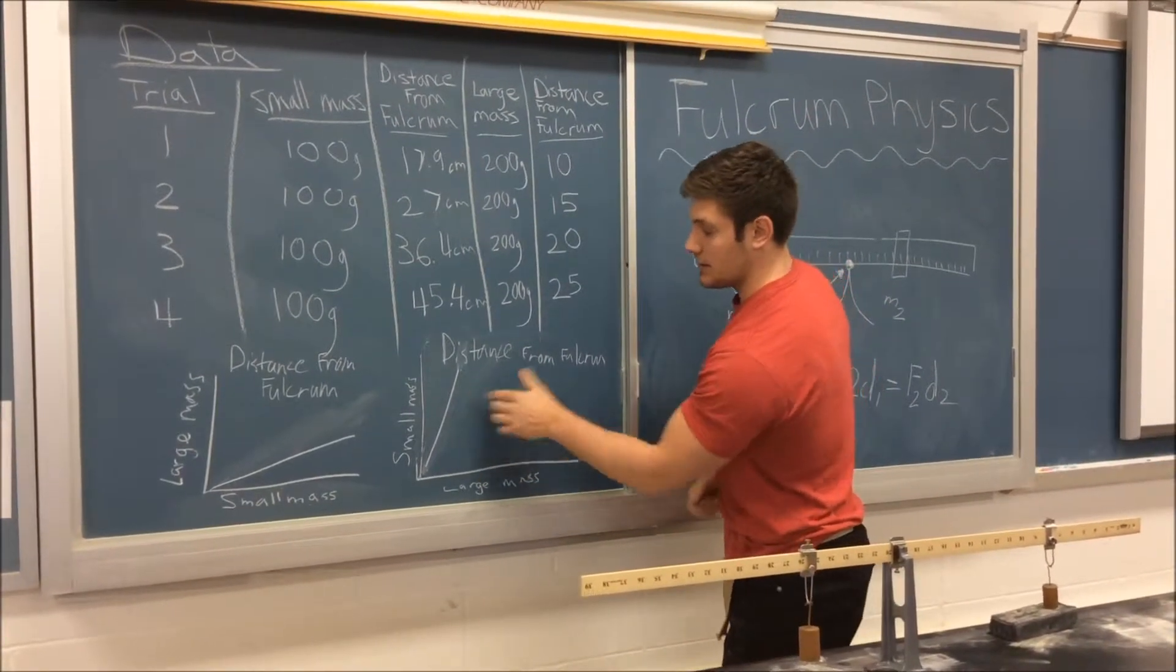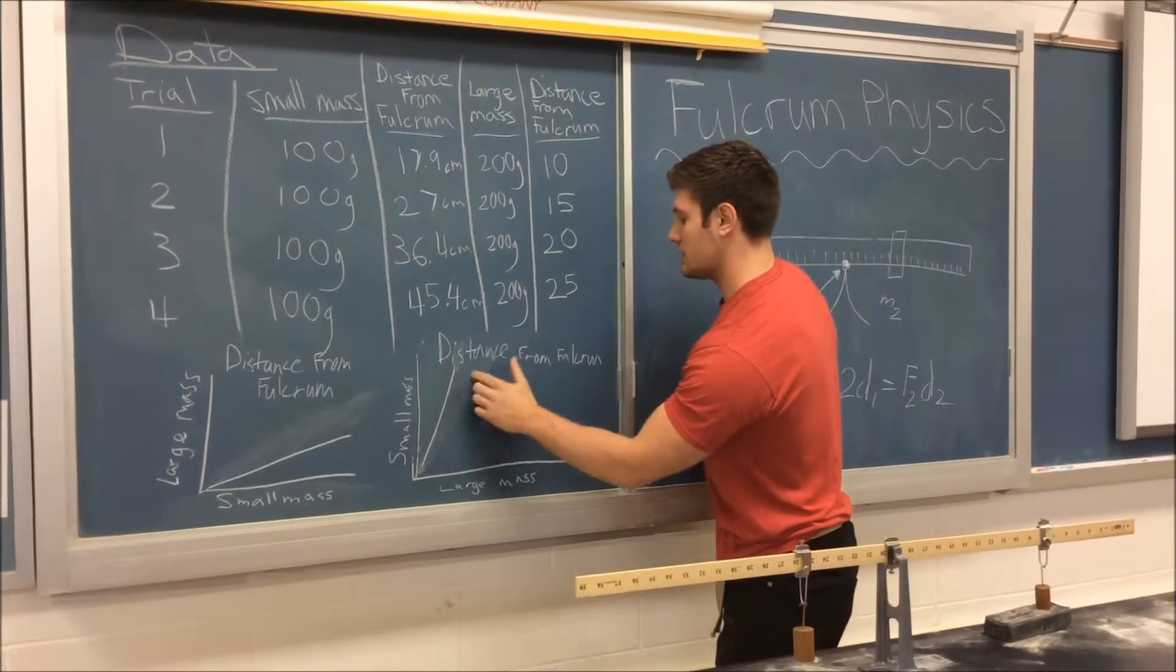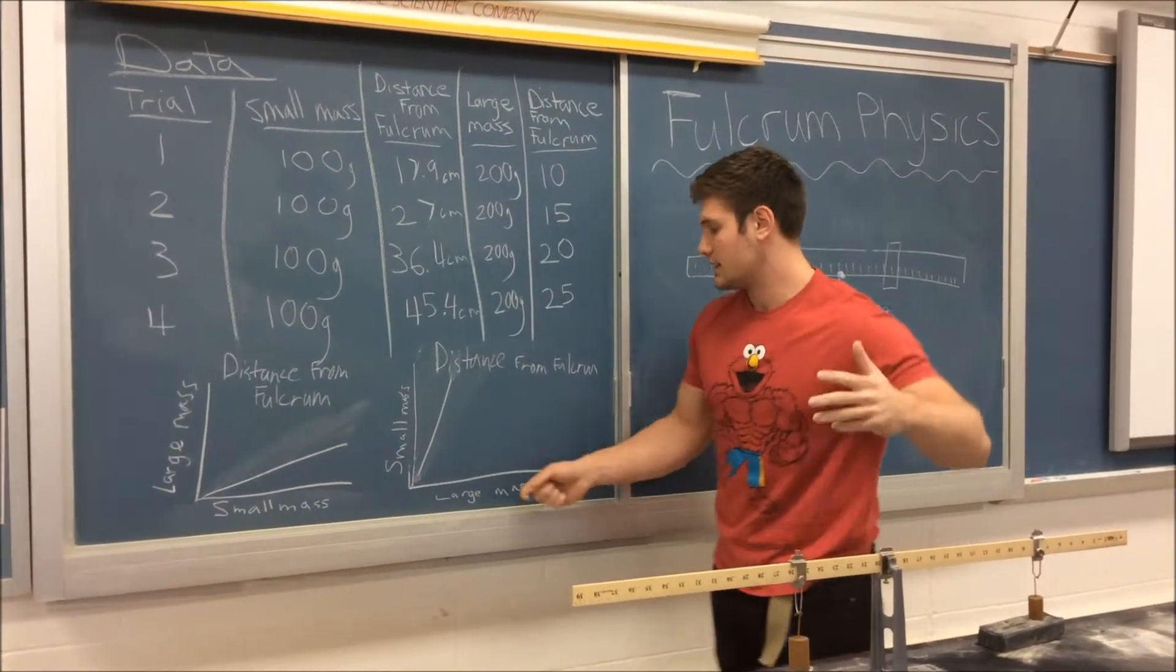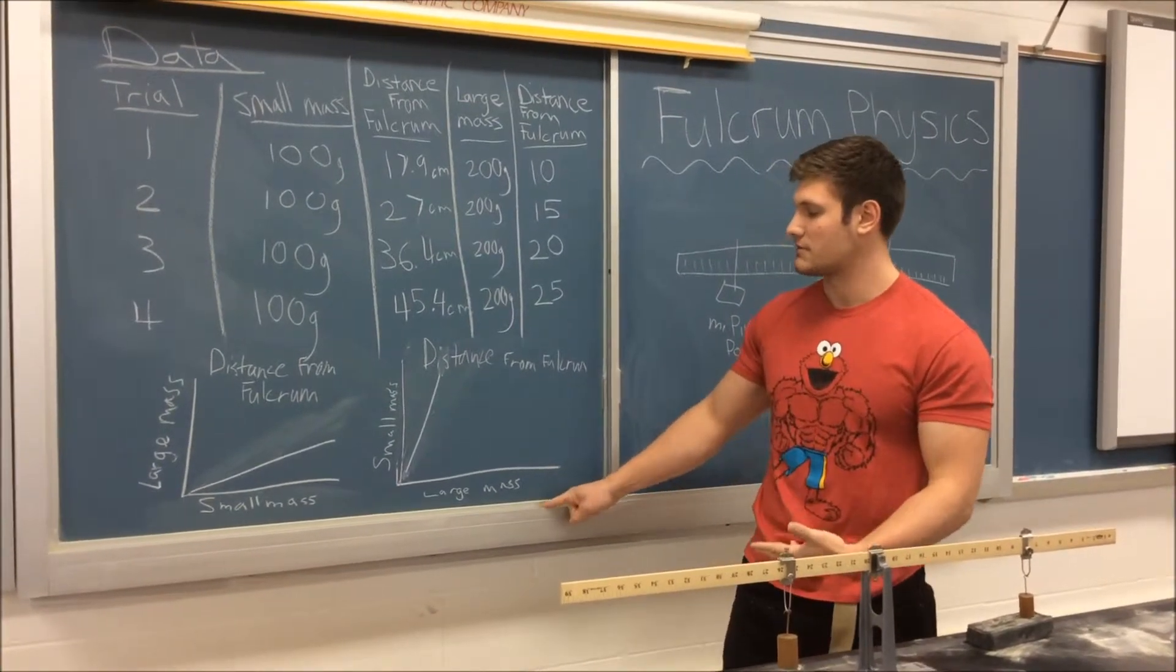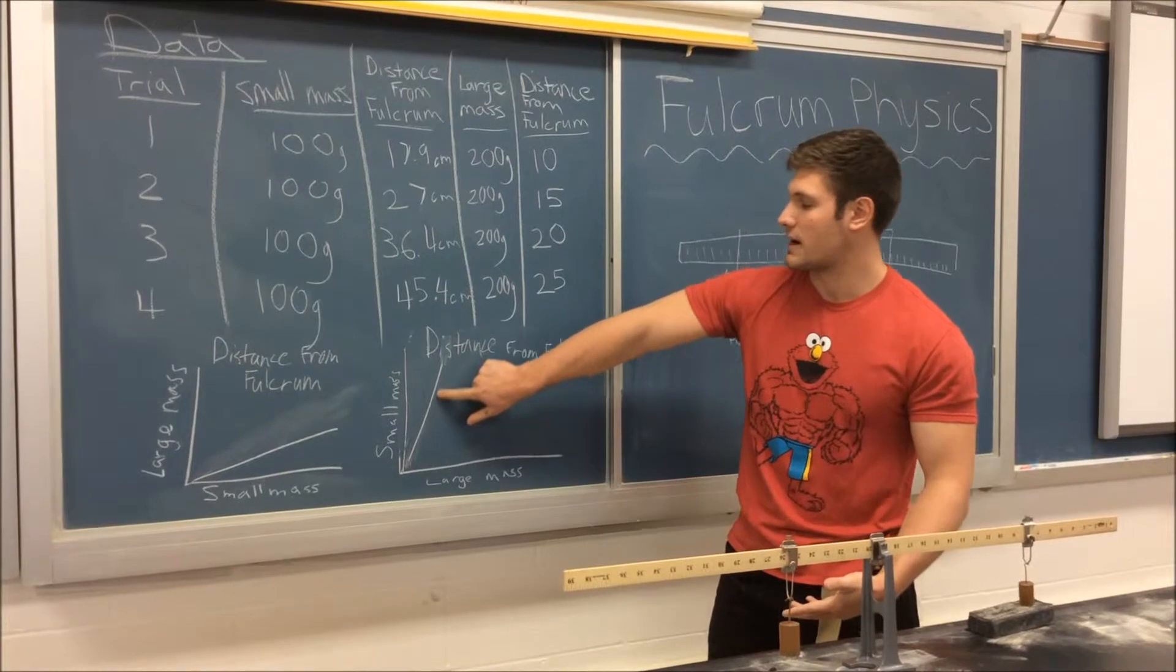So you'll see, inversely, the distance from the fulcrum of the small mass is twice the distance from the large mass, and you'll see that the slope of that graph will be 2.